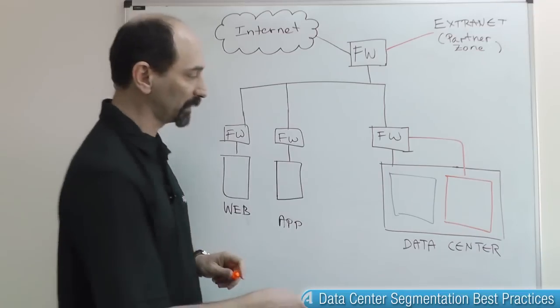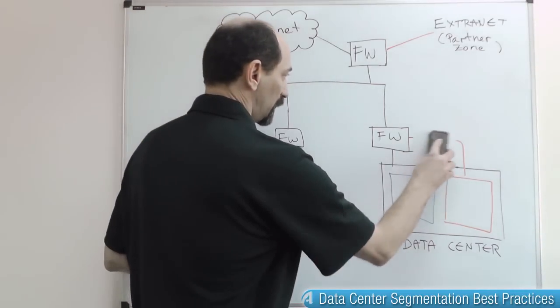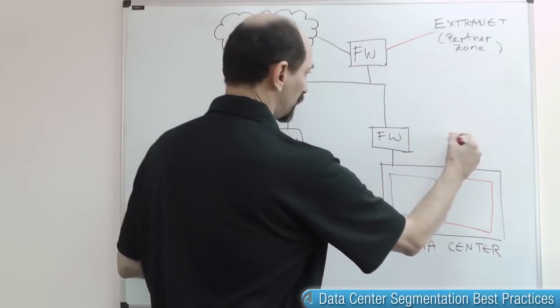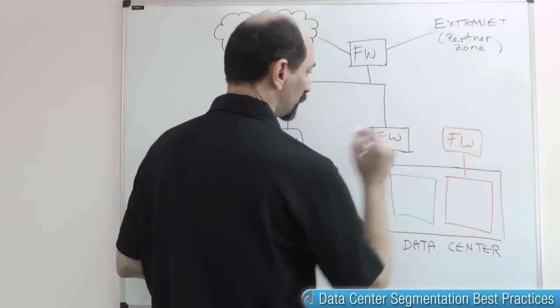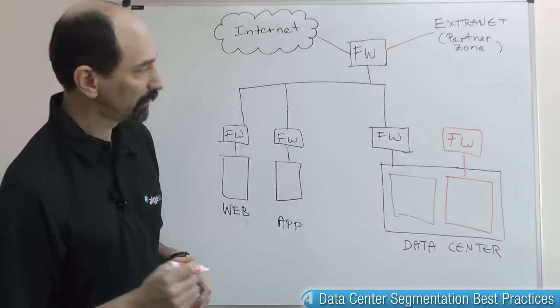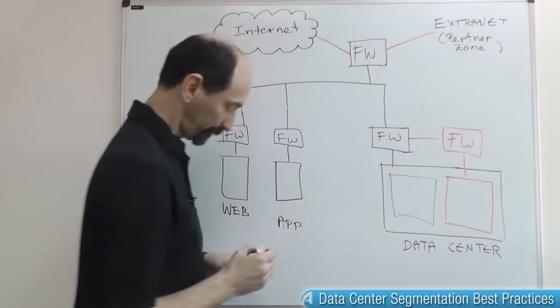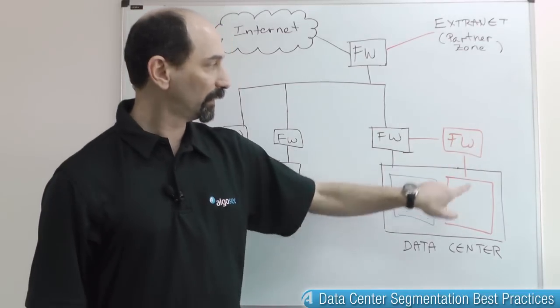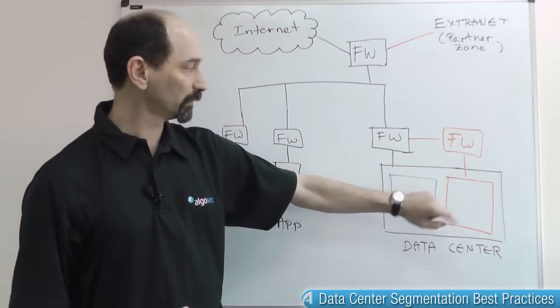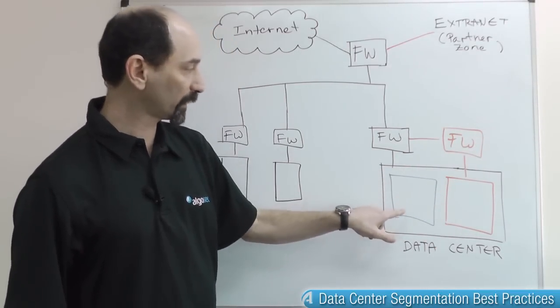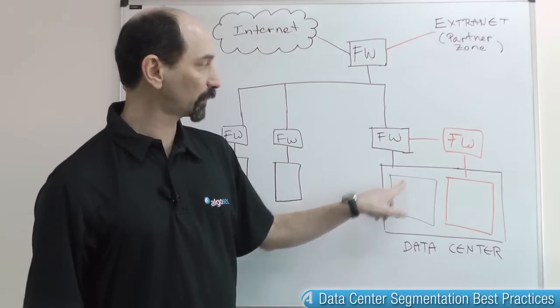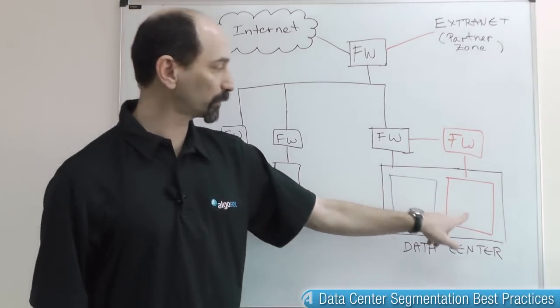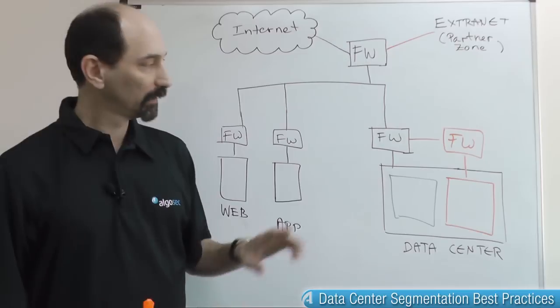You can do one better than that because instead of having another virtual interface on this firewall, you can have a dedicated firewall just protecting the orange zone and connect it this way, giving you even better separation and simplifying the policy on the firewall protecting the orange zone. And now traffic that you want to avoid between those two zones has to cross two firewalls: one protecting the blue zone and one protecting the orange zone. So this is better.